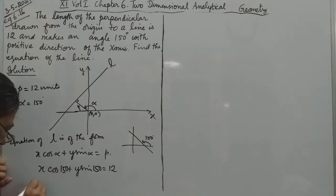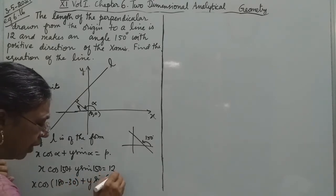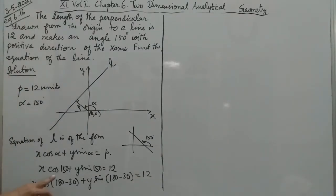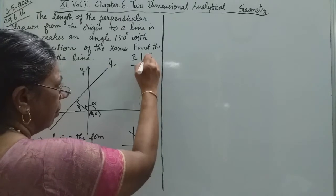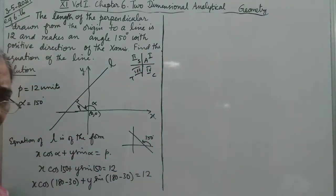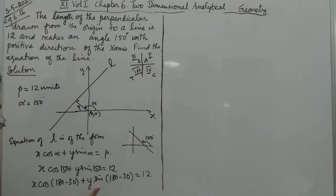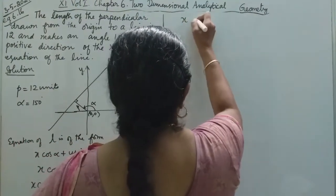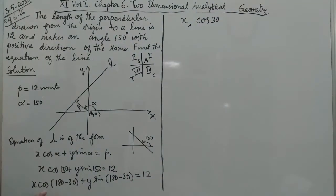Now, 150 degrees is in the second quadrant — that is, 180 minus 30. In the second quadrant, sine is positive but cosine is negative. So cos 150 is negative, meaning we get a minus sign, while sin 150 is positive.